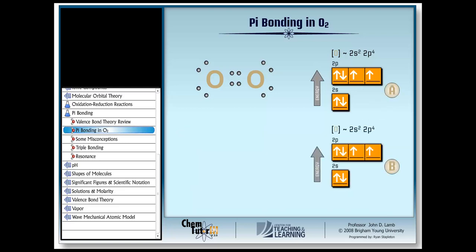So, clearly, to form the two bonds in the double bond, we should overlap one half-filled p orbital on oxygen atom A to a p orbital on oxygen atom B, and then do it again with the other p orbitals. Let's give it a try.